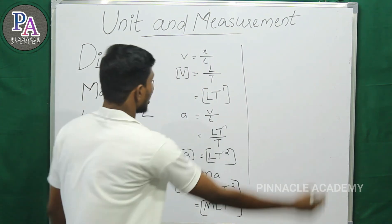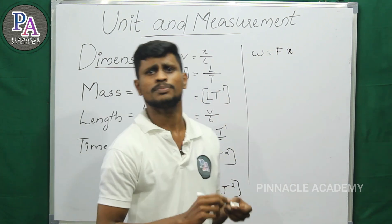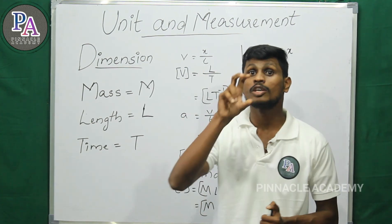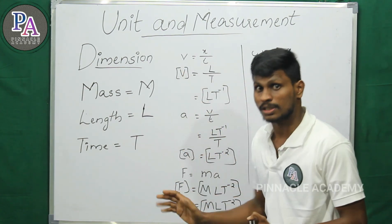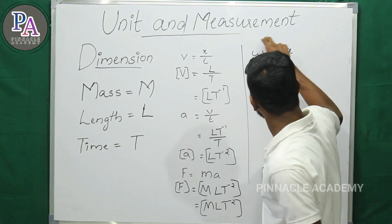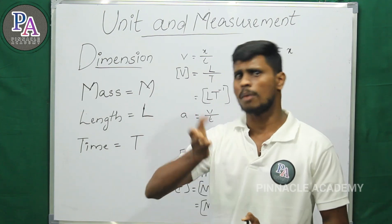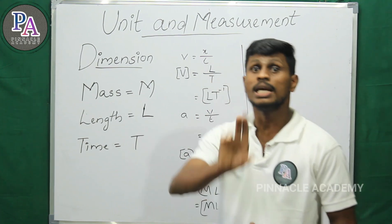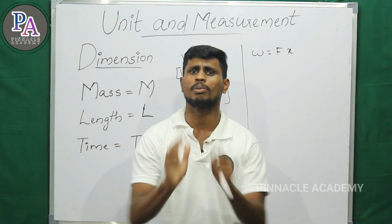Now, work W is equal to force times displacement. In this chapter on units and measurement, we use such equations to find the dimension of physical quantities. The dimension analysis of each equation in this chapter helps us understand the units involved.